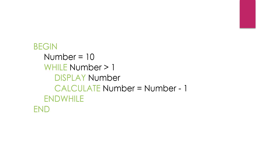The condition is while the number is greater than one — we display the number while reducing it by one. This will repeat 10 times and print numbers from 10 to 1.